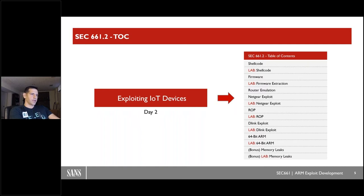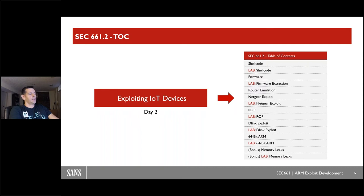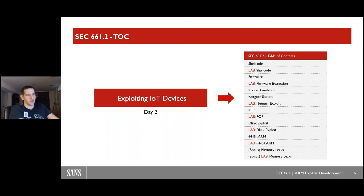Next is a Netgear exploit. When discussions of this class first came up in July 2020, I wanted to see if these types of bugs were still relevant. In fact, the Netgear exploit used in the lab was disclosed in June 2020 — less than a month old when the course was written. So yes, there are still a lot of these types of bugs existing in embedded IoT systems. Next we look at ROP — return oriented programming — covering that in depth with a lab.